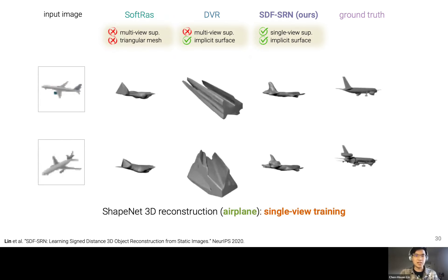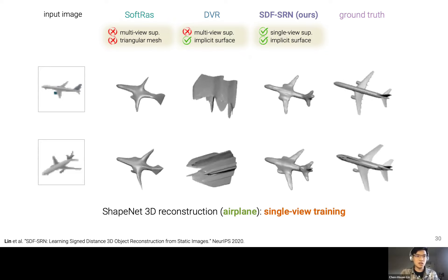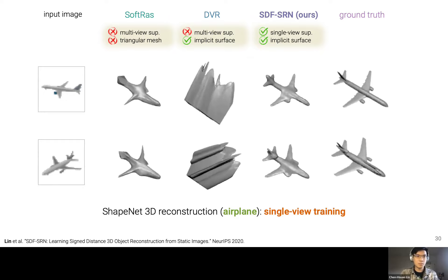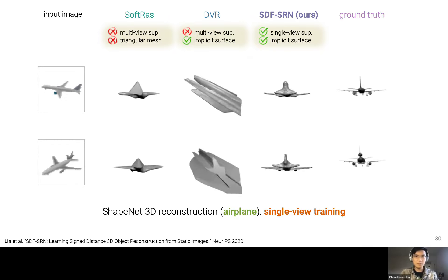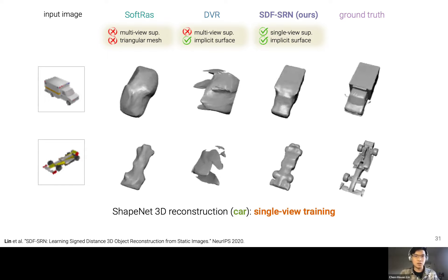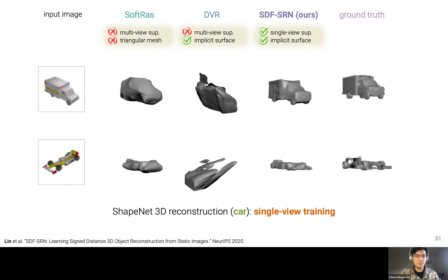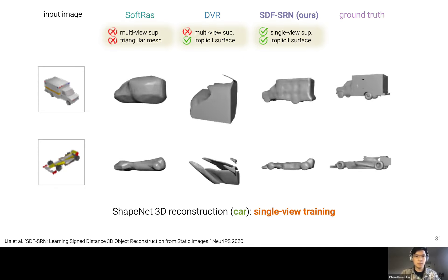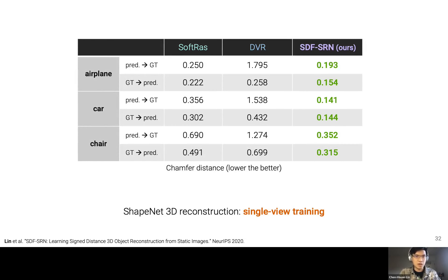We show results trained in a category-specific setting, including chairs, airplanes, and cars — including trucks and racing cars — consistently outperforming baselines. We quantitatively measure reconstruction errors using bidirectional metrics that measure shape accuracy and surface coverage, and our method achieves much lower error in all aspects compared to the baseline methods.